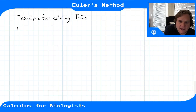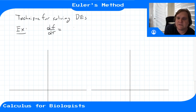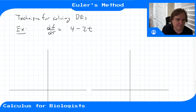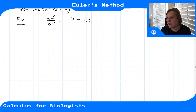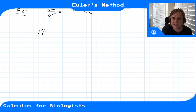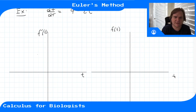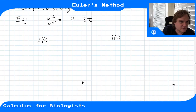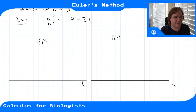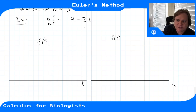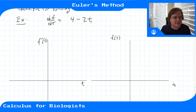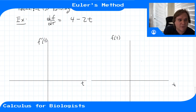Let's say we have a differential equation df/dt equals 4 minus 2t. We want to draw what f is. If I have f prime of t versus t, can we draw f versus t? We know how to draw functions given information about their derivatives — that's what we learned in the last couple chapters. We have this derivative; let's plot it. That'll tell us where the function is increasing or decreasing.